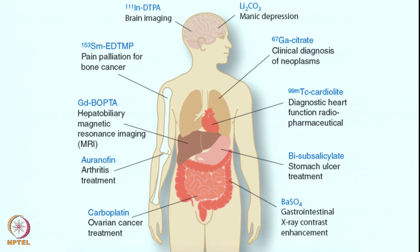Metal ions are also present in many life-saving or crucial drugs that directly or indirectly save our lives. For instance, we have the platinum series of drugs — cisplatin, carboplatin — we have auranofin, barium sulfate for gastrointestinal X-ray contrast enhancement, and lithium carbonate for manic depression. All of them have one thing in common: they are metal-based, and there is a ligand that holds the metal ions in place.